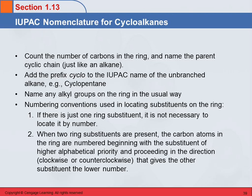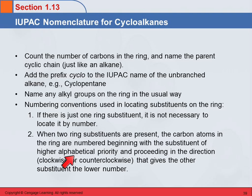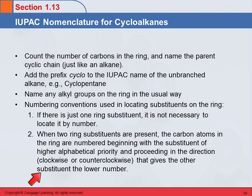If there are two or more substituents, you number the atoms in the ring beginning with the substituent of higher alphabetical priority. So you look for the one that comes first in the alphabet, and then from there you proceed around — clockwise or counterclockwise — in a way that gives the other substituent the lower number.